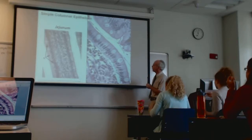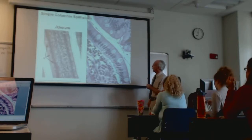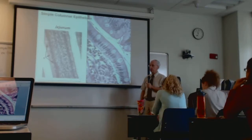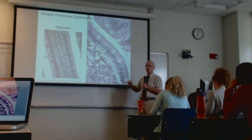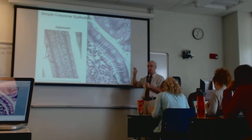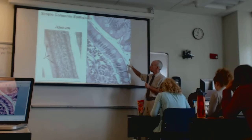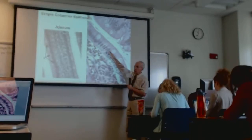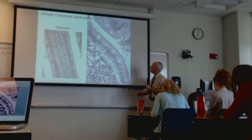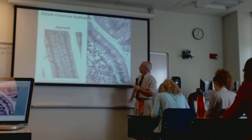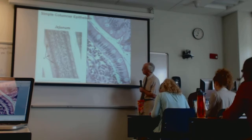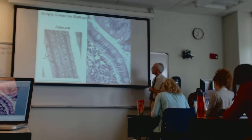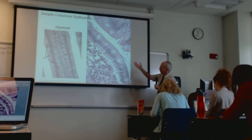Simple columnar epithelium — I want you to be able to differentiate simple columnar from ciliated pseudostratified columnar. You see this nice, relatively linear arrangement of the nuclei, you see the brush border — all of this is consistent with simple columnar. We're looking at an intestinal villus in this case, in the jejunum.